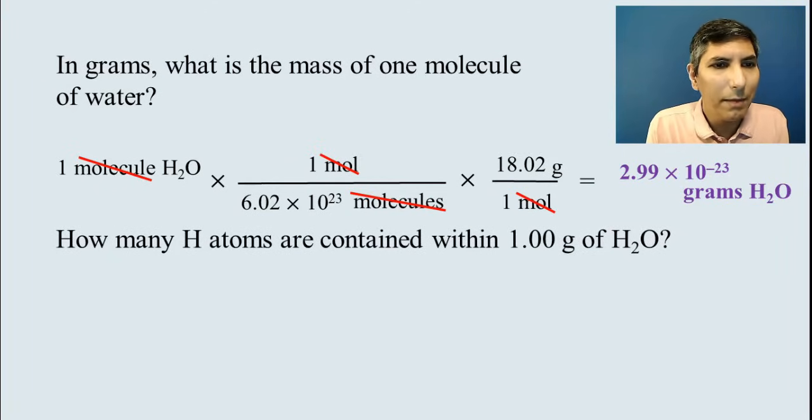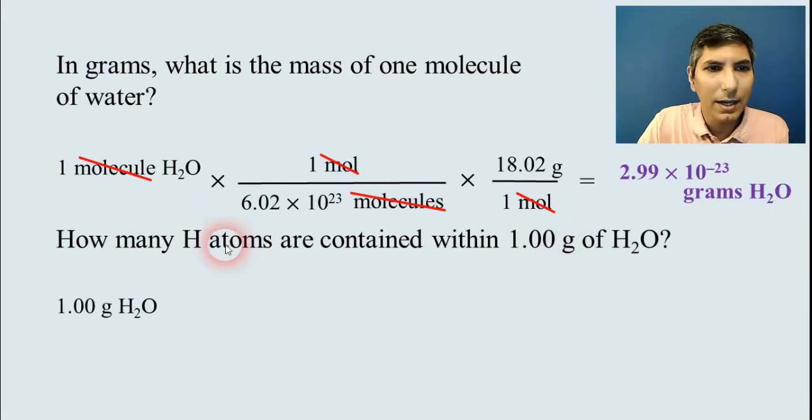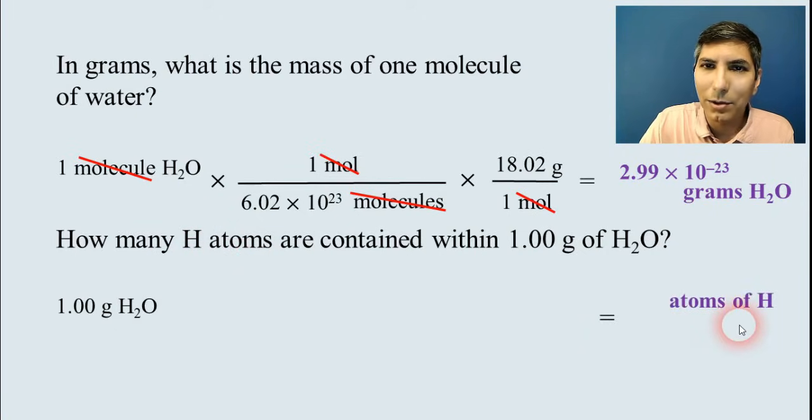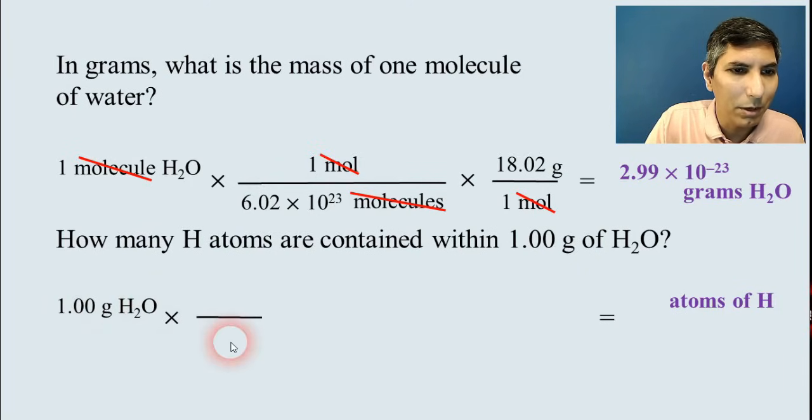Here's another good question. How many hydrogen atoms are contained within 1.00 grams of water? Well, once again, we're starting with one gram of water. And this time, we're being asked about atoms of hydrogen. So that's going to be our unit we have at the end. And we have obviously multiple steps because we can't go directly from grams to atoms. So what do we convert to first? Always convert to moles first. All roads lead to moles.